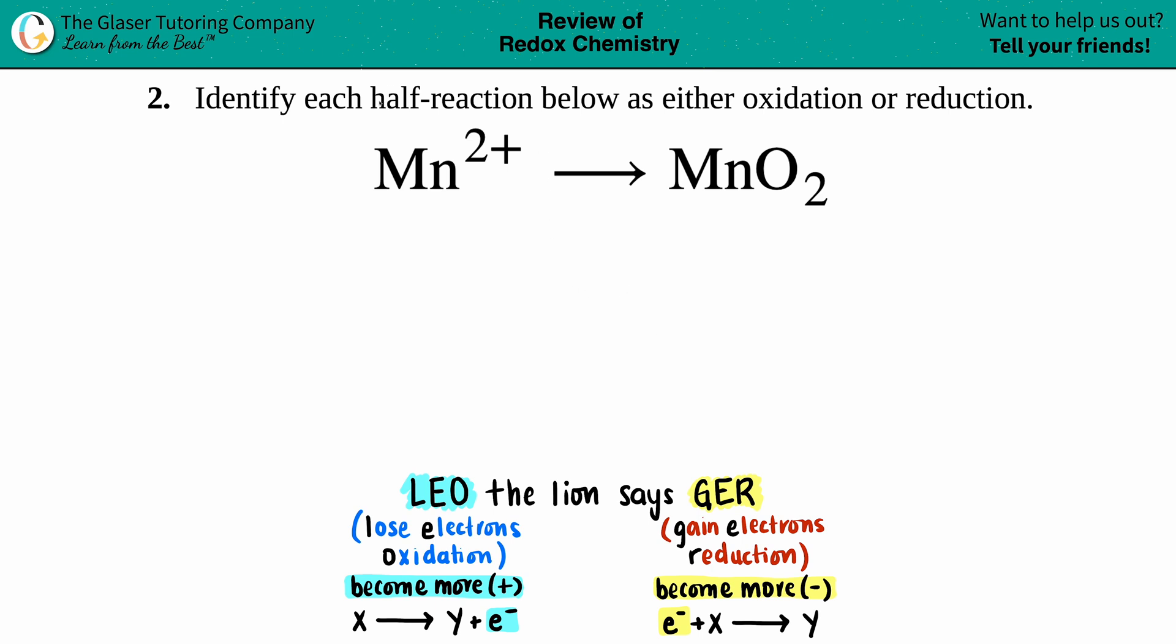Number two: identify each half reaction below as either oxidation or reduction. We have Mn²⁺ which will yield MnO₂. Whenever we're dealing with oxidation and reduction, or redox reactions (REDOX - the combination of the two words), we always think of the mnemonic LEO the lion says GER.